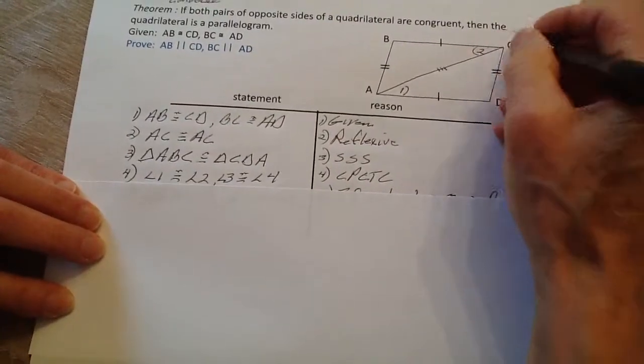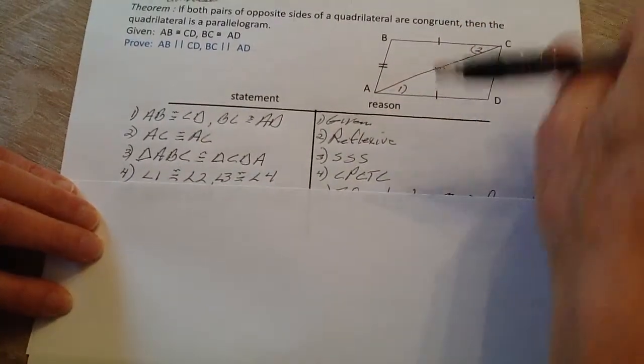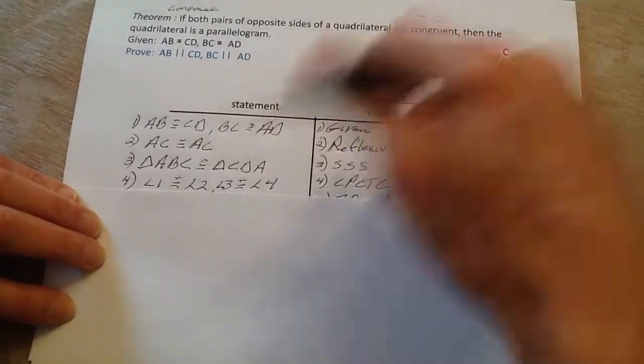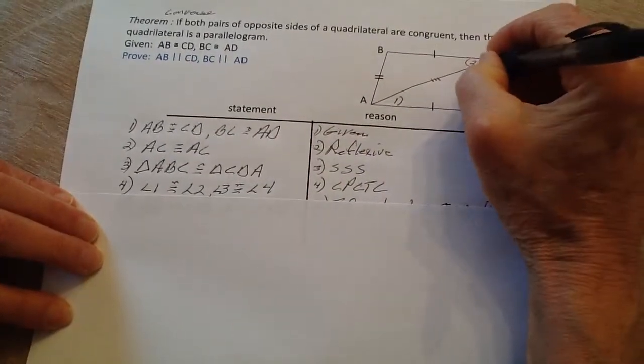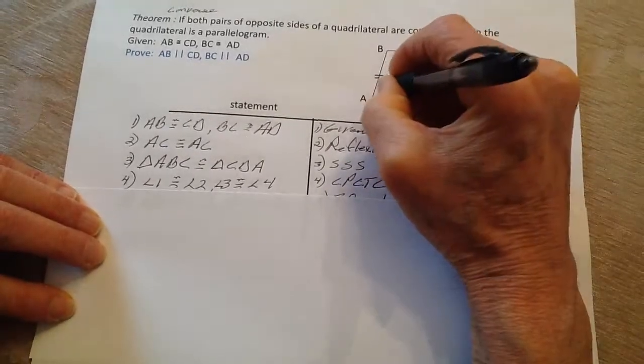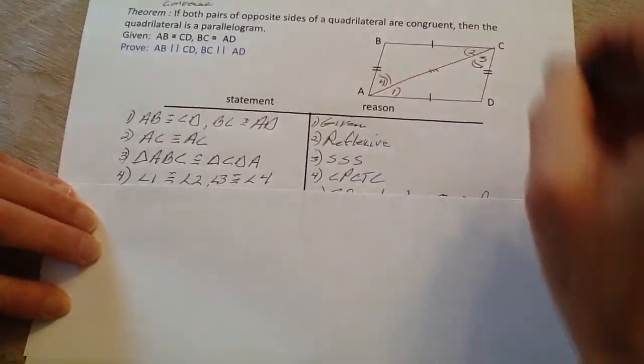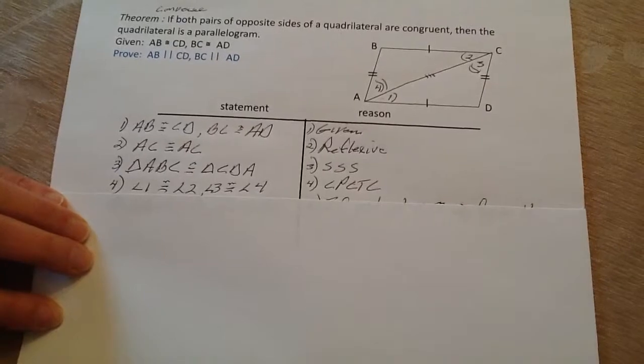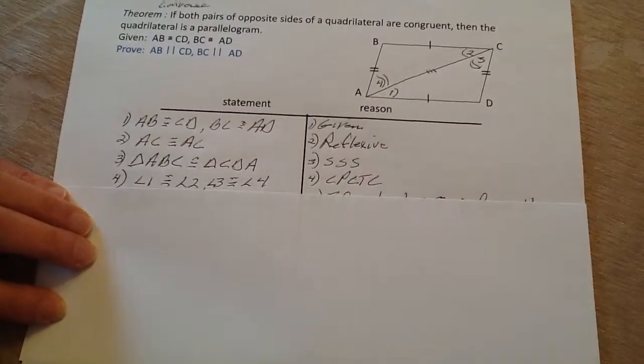Now, if I rotate everything around, then I'll have angle three over here congruent to angle four over here. And that's all because of the corresponding parts.